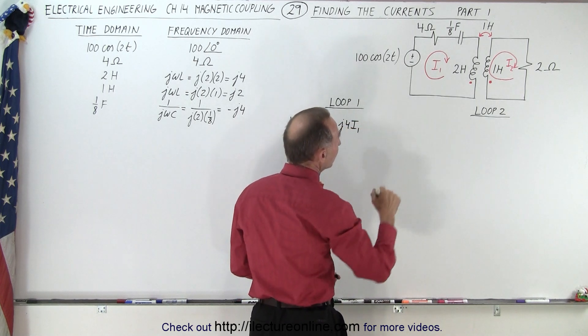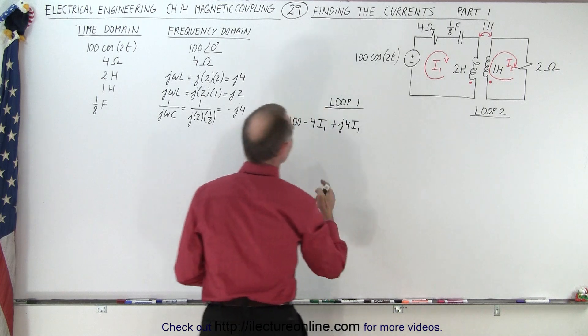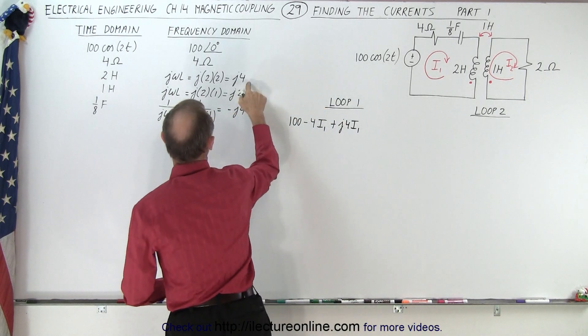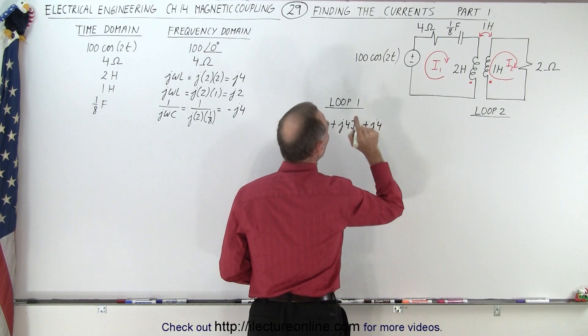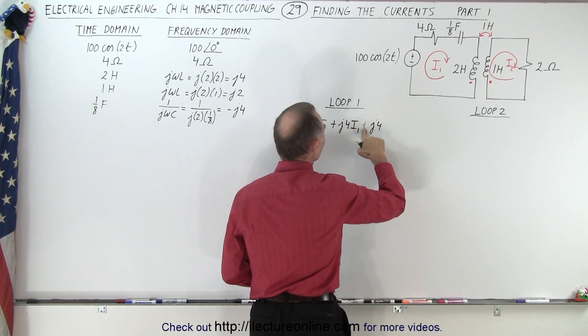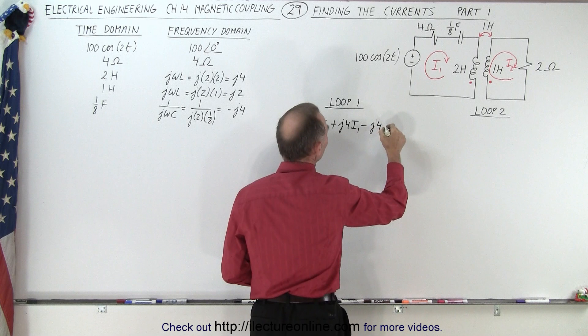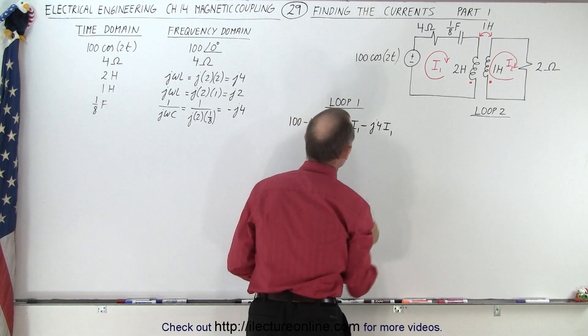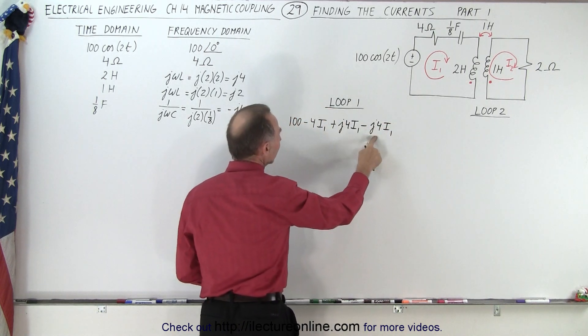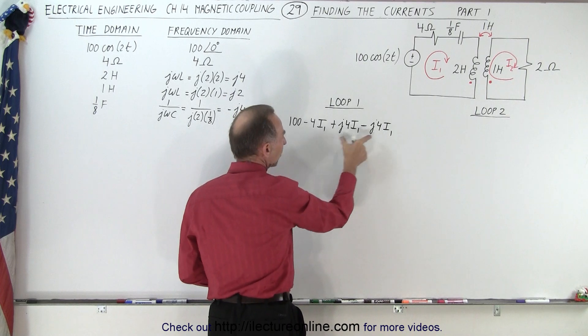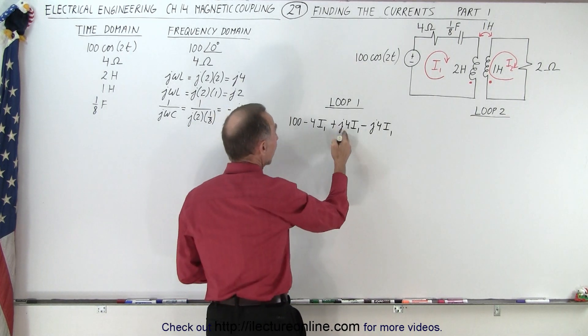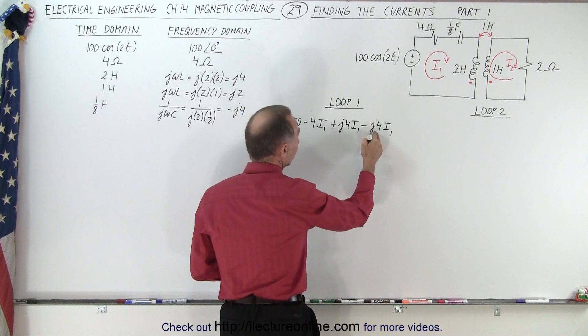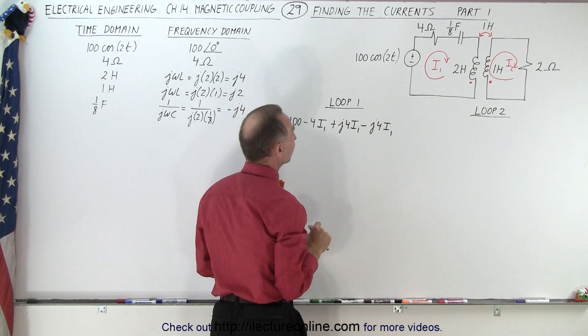Then we go across the inductor. That's a voltage drop. It's a two Henry inductor. So notice we have a plus J4. Oh no, I'll take that back. It's minus because we have a voltage drop. So minus J4I1. So the reason why this is positive and this is negative, we actually have a voltage drop across each, but because of 180 degree phase difference between the reactance of a capacitor and the reactance of an inductor, we then turn the negative into a positive.